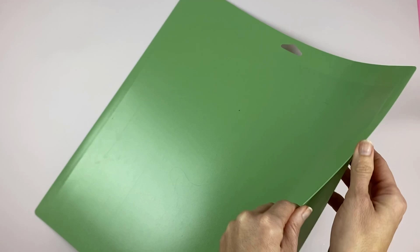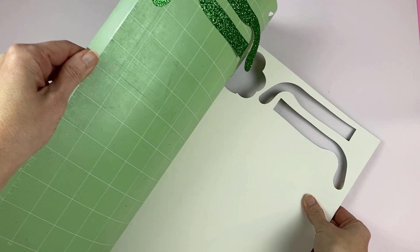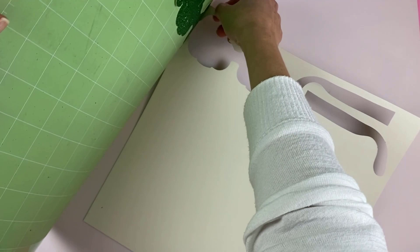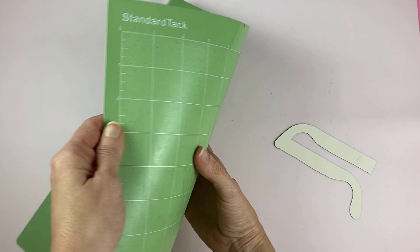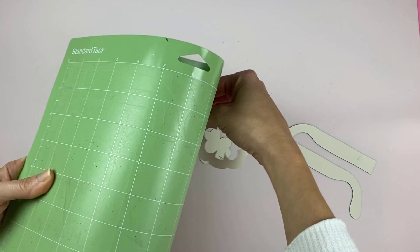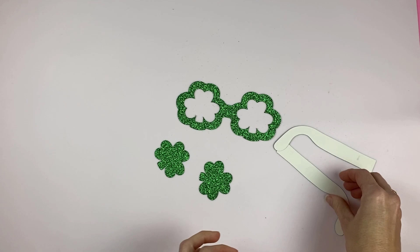Okay, and now we always want to flip our cardstock over and peel the mat away from the cardstock so we don't bend our beautiful glasses. Okay, and it came out perfect.